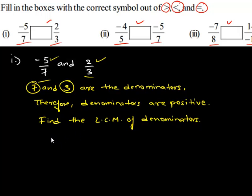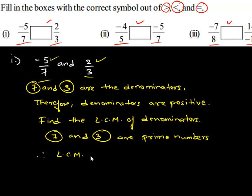The denominators we have are 7 and 3. We know that the LCM of prime numbers is the product of the numbers itself. Here, 7 and 3 are prime numbers. The LCM of 7 and 3 is 21, which is 7 times 3.